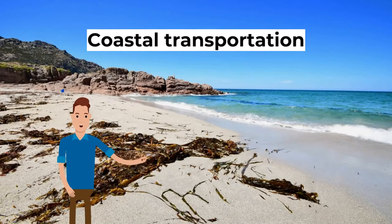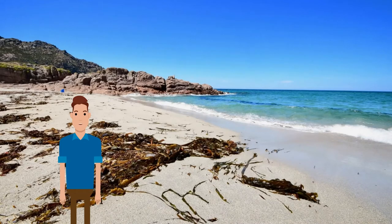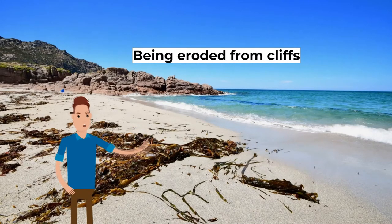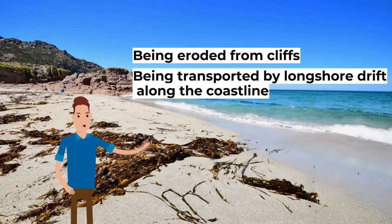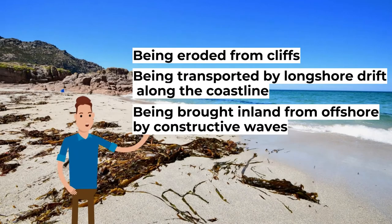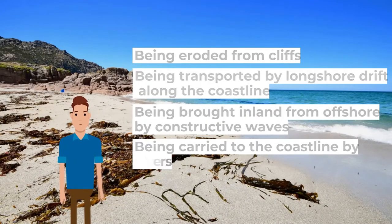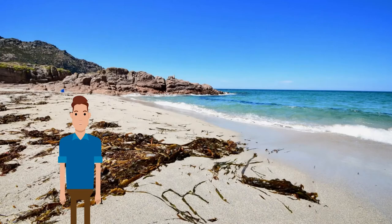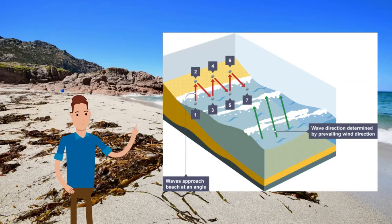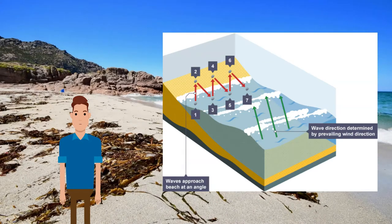Moving on to coastal transportation. The various types of material found in the sea come from many different sources, including: 1. being eroded from cliffs; 2. being transported by longshore drift along the coastline; 3. being brought inland from offshore by constructive waves; 4. being carried to the coastline by rivers. Waves approach the coast at an angle due to the prevailing wind. The swash carries material up the beach at an angle, while the backwash flows back to the sea in a straight line at 90 degrees. This continual movement of material sideways along the coast is called longshore drift, and it occurs in a zigzag pattern.